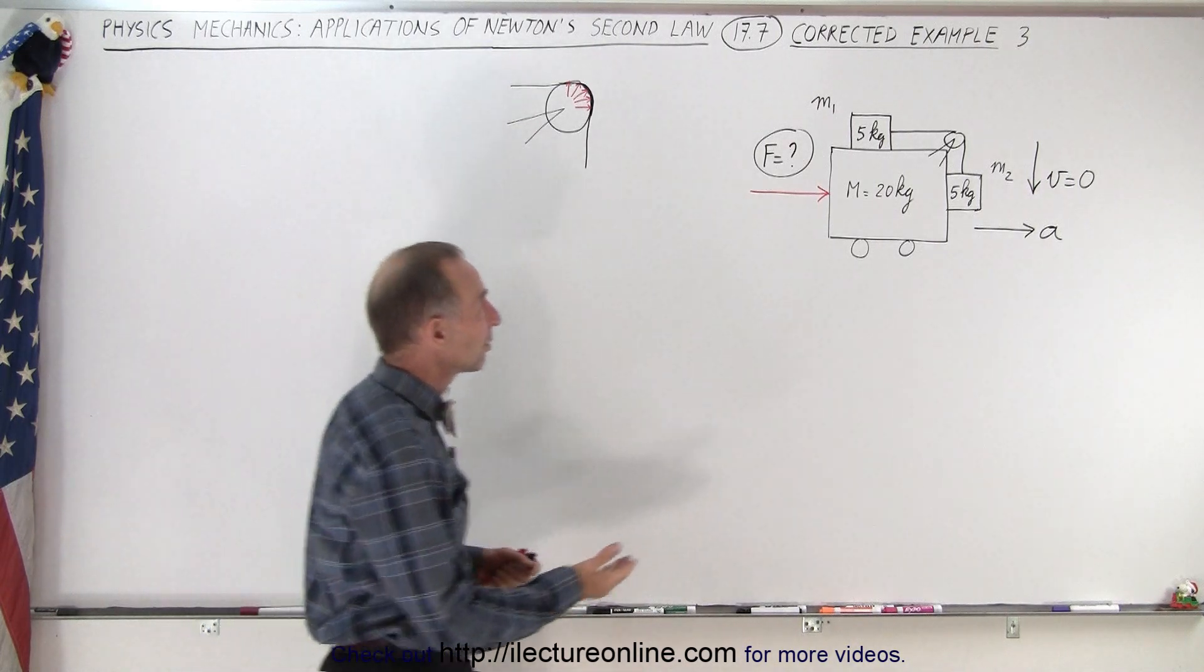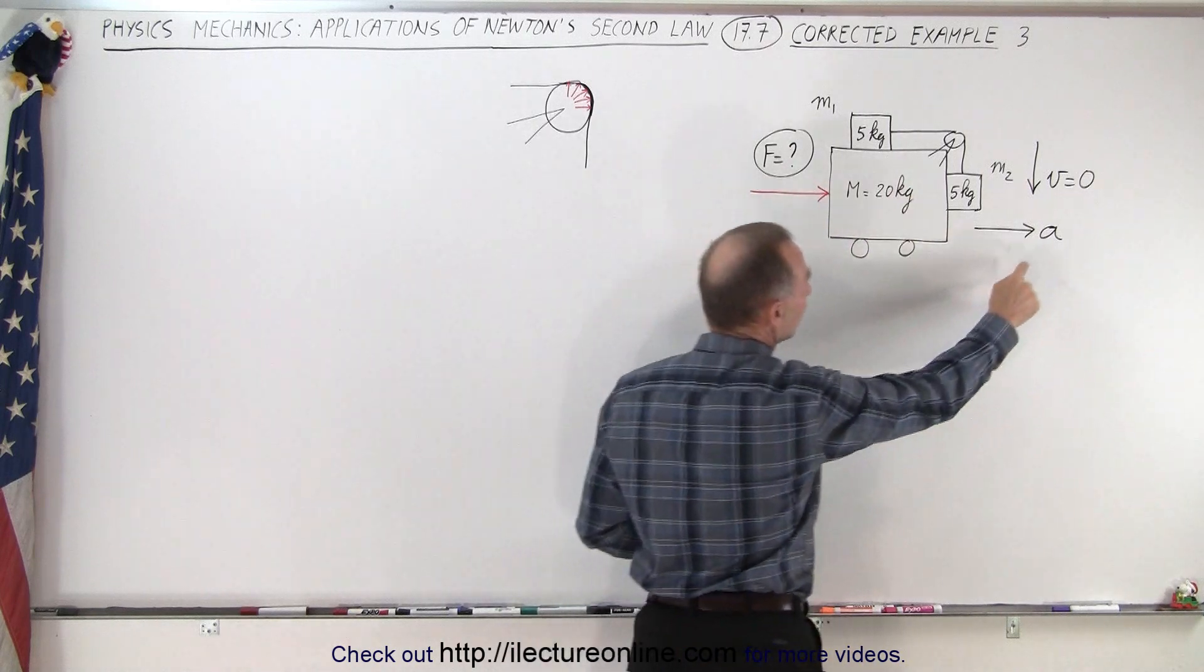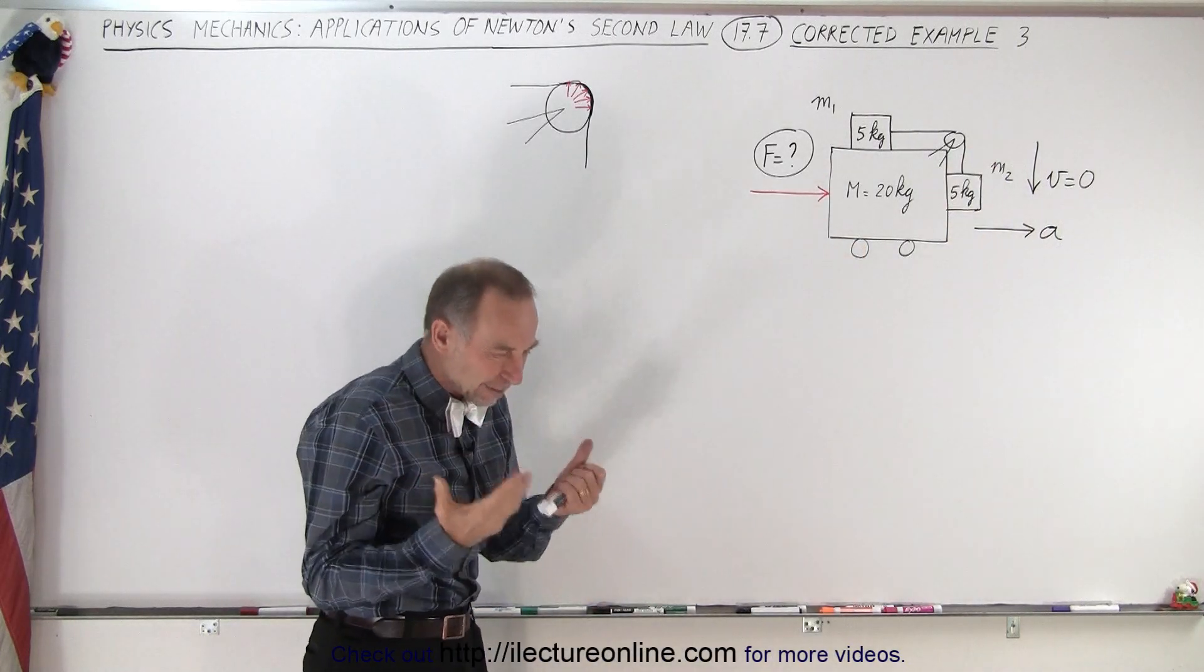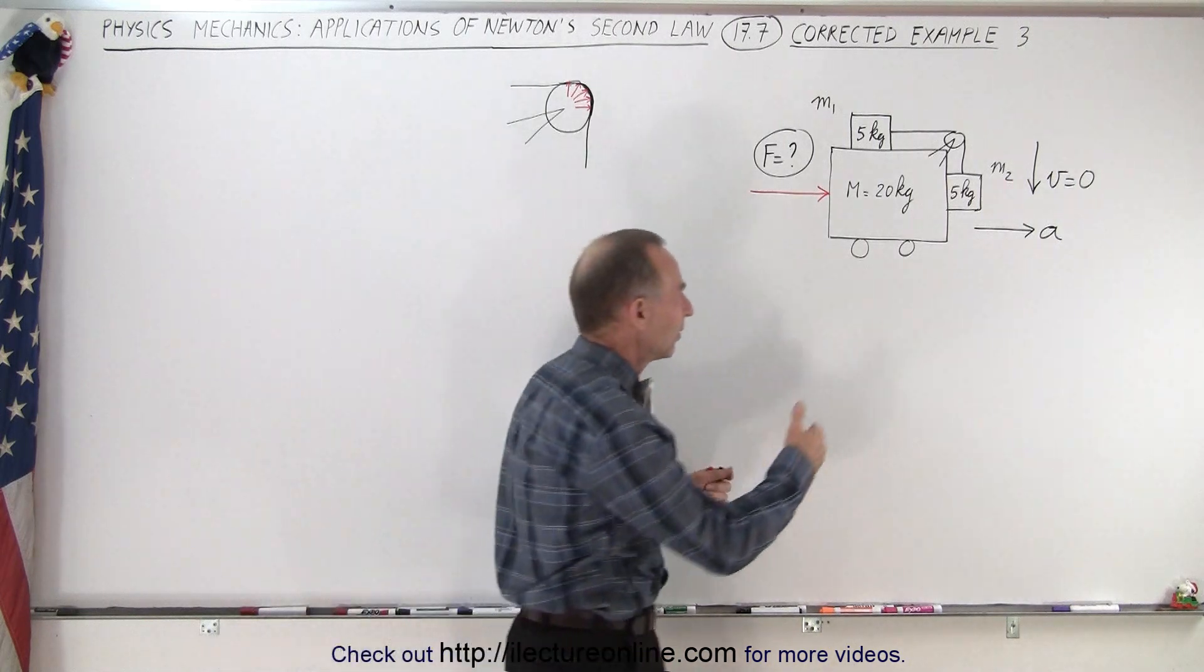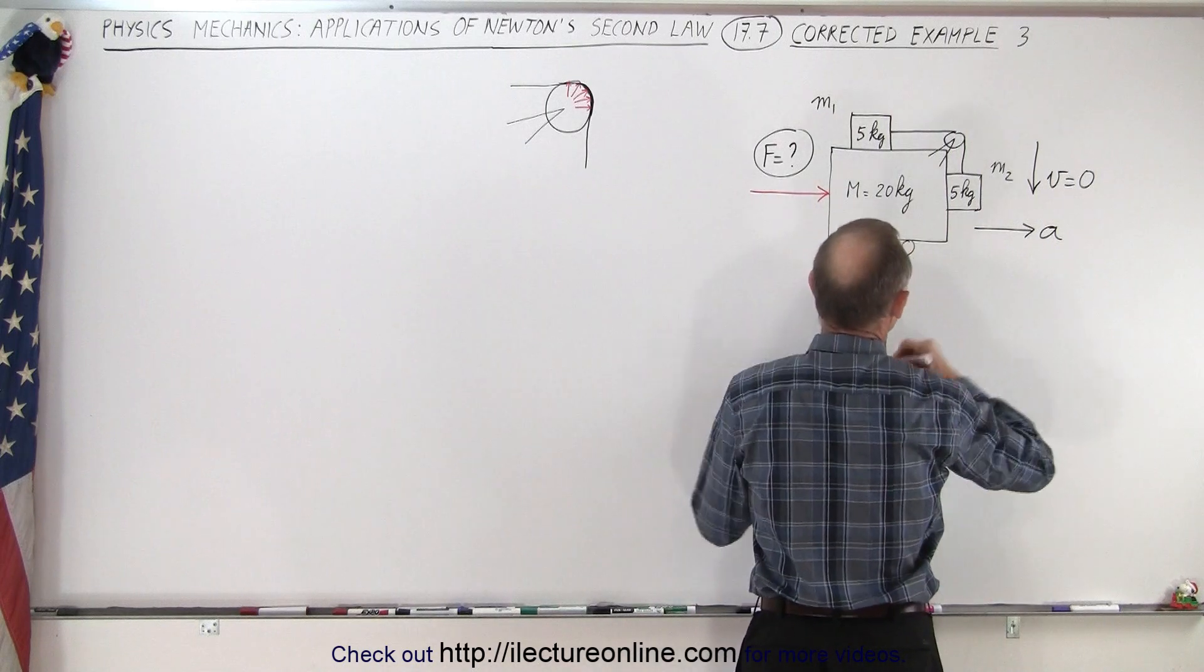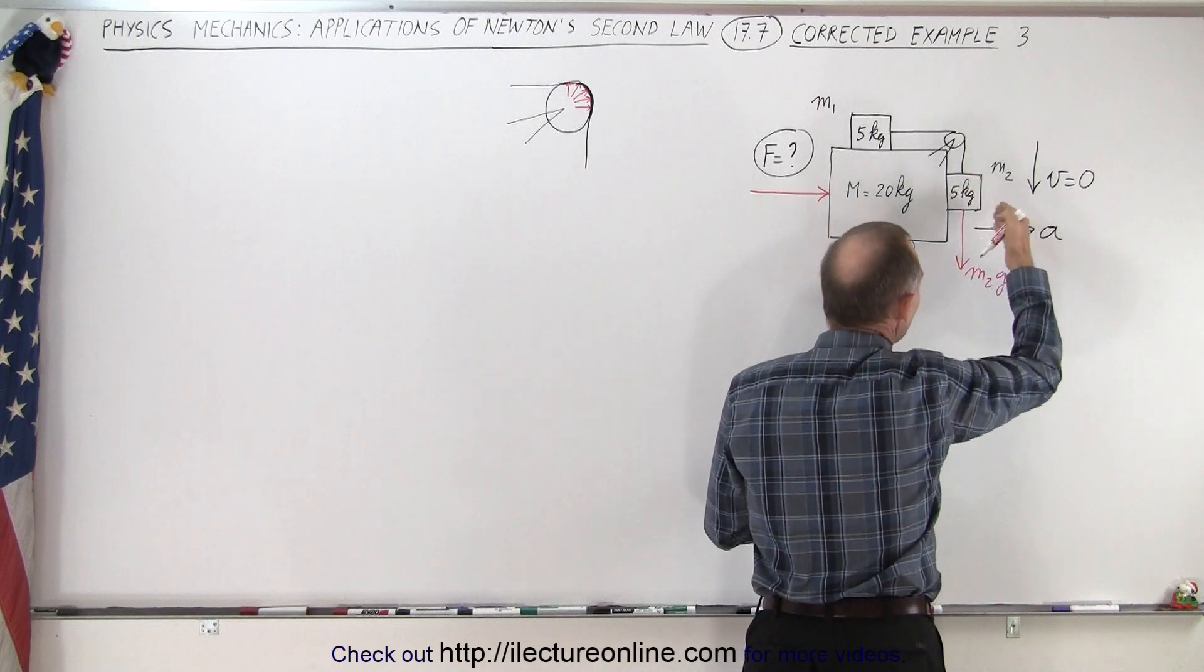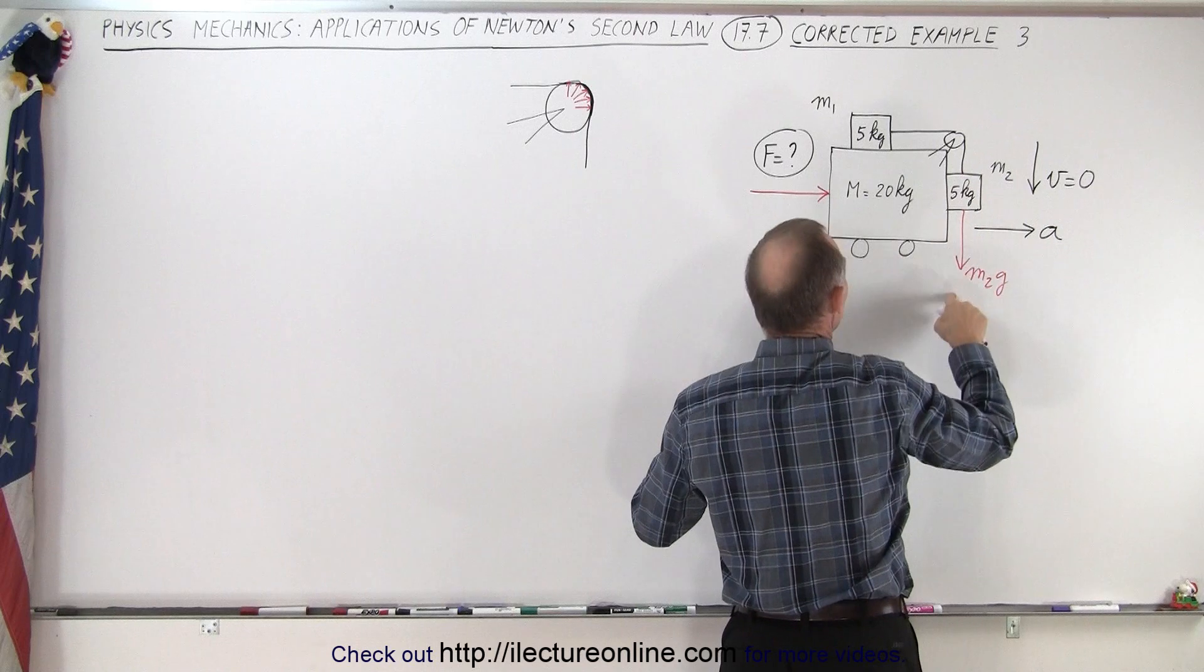But the whole idea was that how much force is required to push this system to the right to give it a particular acceleration in such a way that this hanging mass will not be coming down. And when you think about it, it almost seems impossible. This mass is going to have to come down because we have the force of gravity pulling down on it. We have the M2G. And so this is not going to stay in place regardless of what happens because this will be pulled down by gravity.